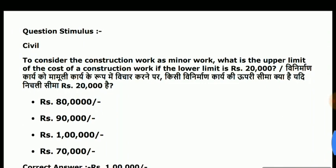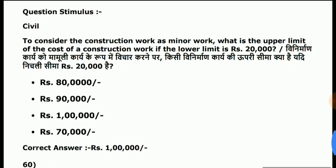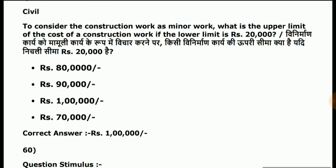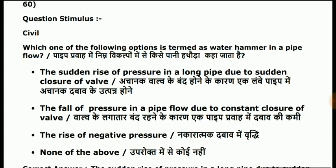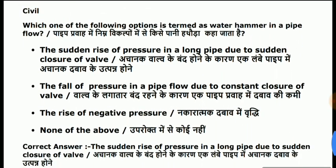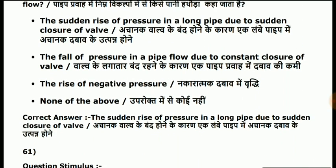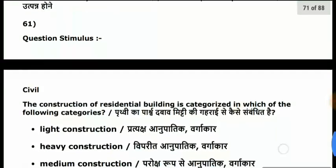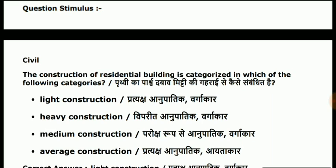Question 59: consider the construction work as minor work. What is the upper limit of cost if the lower limit is Rs 20,000? Answer is 1 lakh. Question 60: which one of the following is termed as water hammer in a pipe flow? Question 61: the construction of a residential building is a category in which of the following? Answer is light construction.